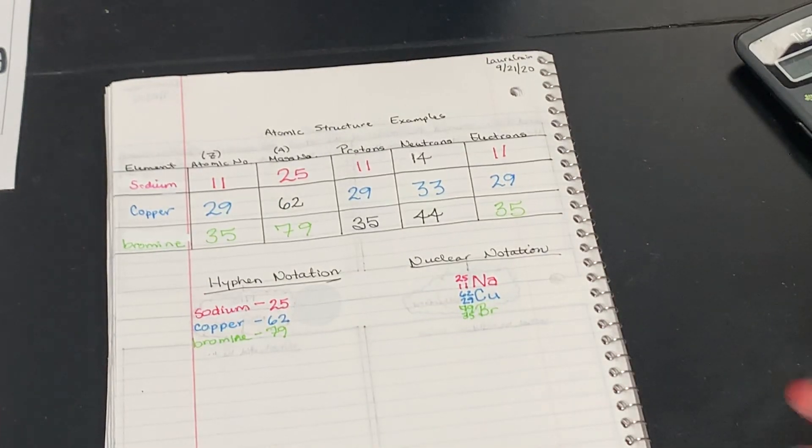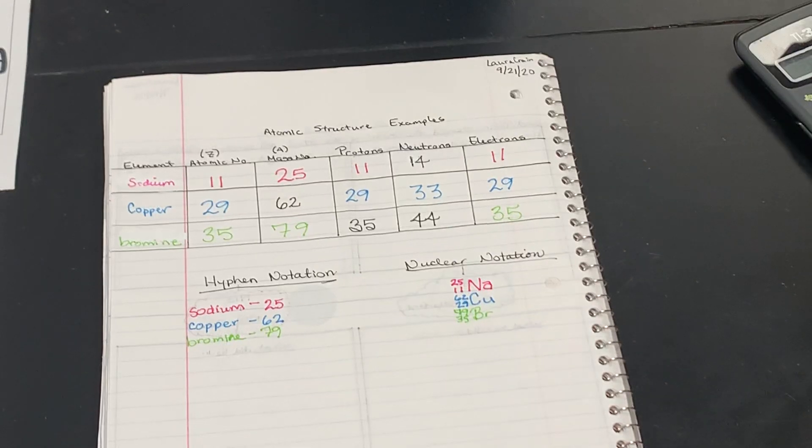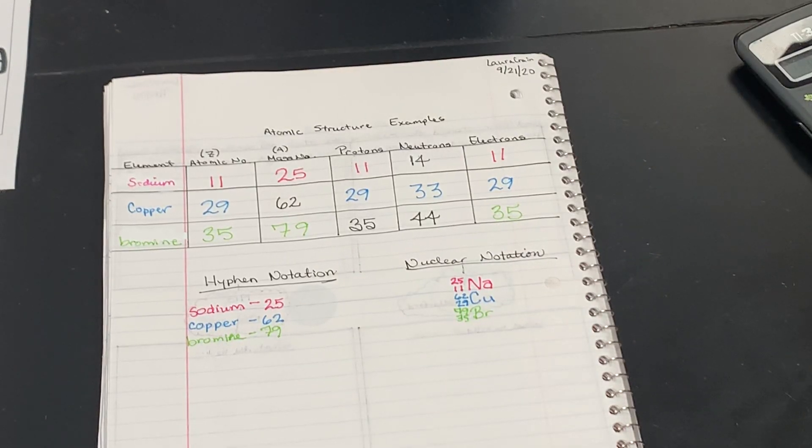Alright, so those are some examples for how to do finding protons, neutrons, electrons, mass number, atomic number, all that jazz, and for how to write those notations.